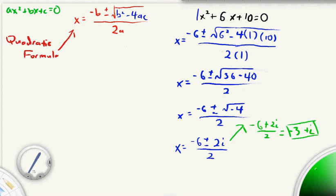And then the other solution is going to be negative 6 minus 2i over 2. And again, we're going to just do the same thing here. So negative 6 divided by 2 is negative 3, negative 2i divided by 2 is minus i. And so our other answer is going to be negative 3 minus i.